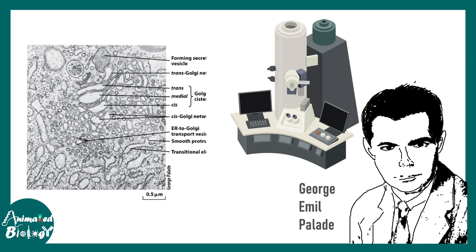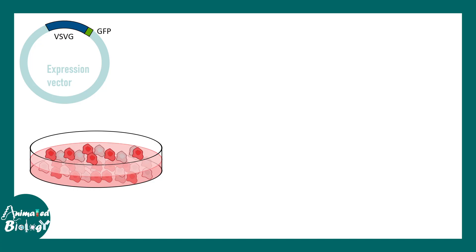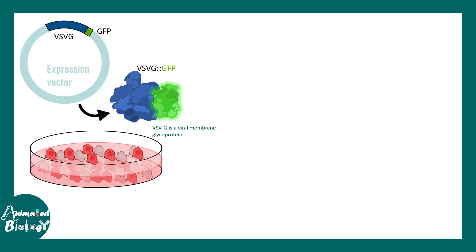Many of these findings were later validated by beautiful electron microscopy studies by George Palade, who was a trained electron microscopist. These days, we can do it with fluorescence. Imagine a cultured cell line where an expression vector encodes a VSV protein — a viral surface glycoprotein — tagged with GFP. In this fusion protein, GFP makes it trackable and traceable. Since this protein is displayed on the membrane, one can literally track its movement through organelles to understand the sequence of events.